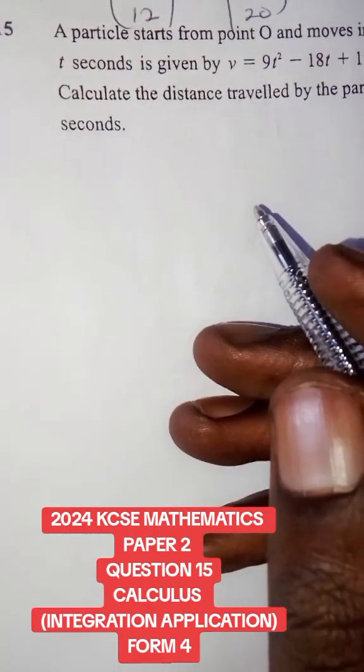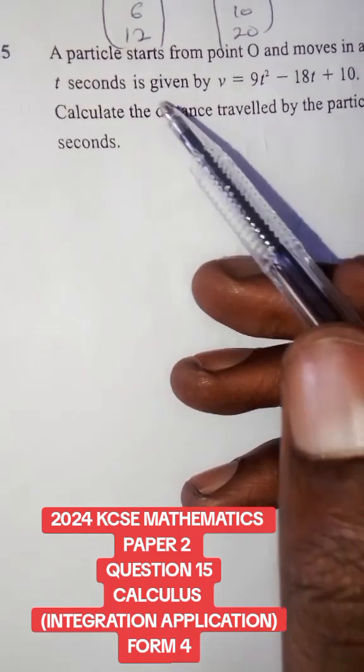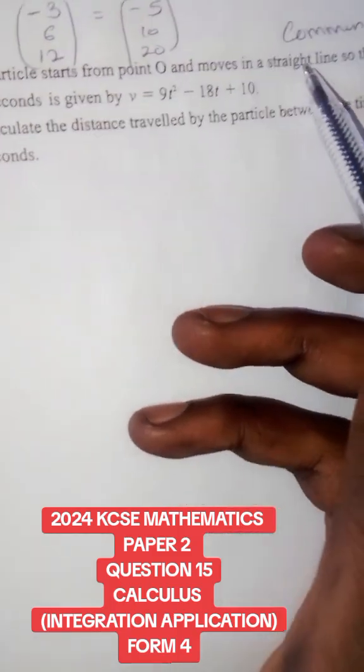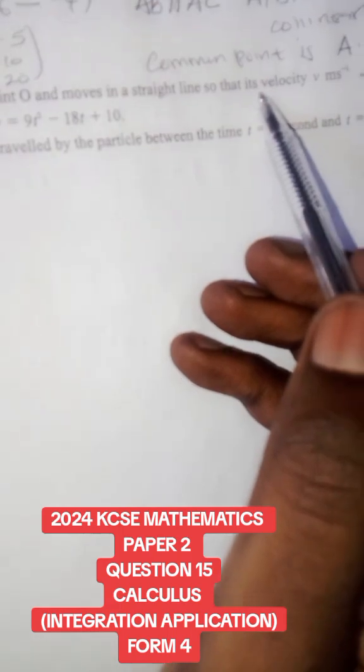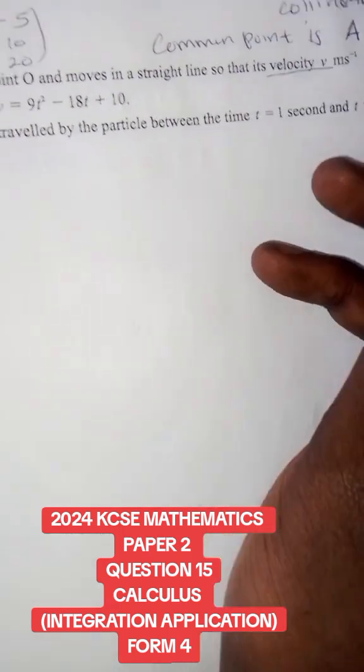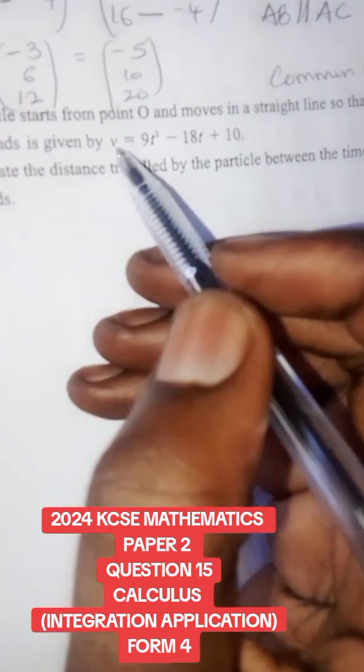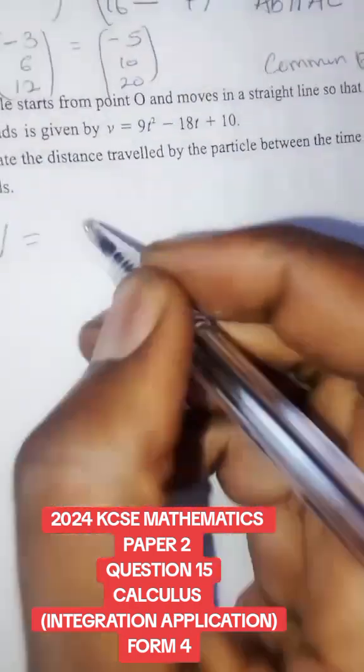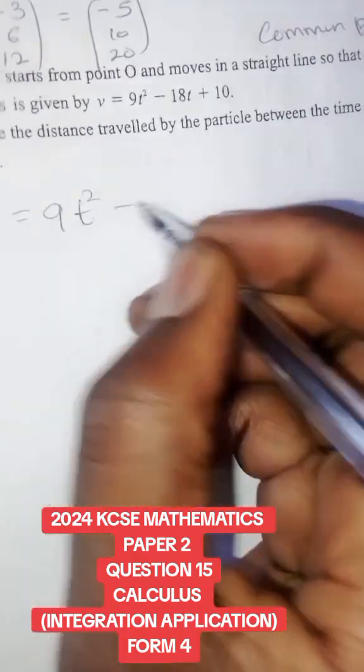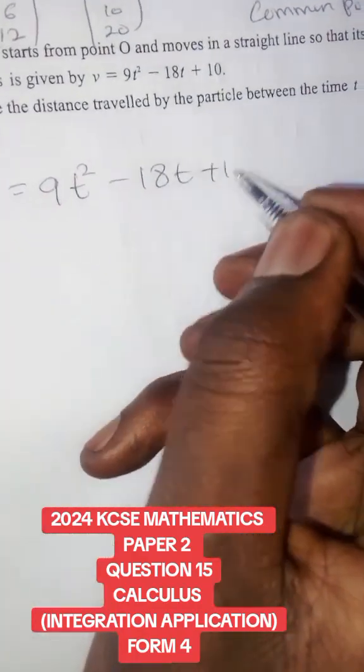Now, question 15 of KCSE paper 2, 2024. You're told that a particle from point O moves in a straight line with velocity after t seconds given by v = 9t² - 18t + 10.